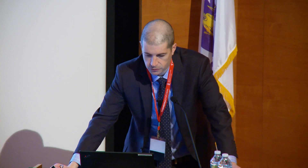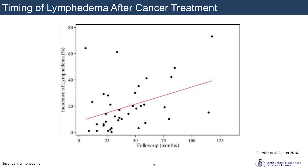Looking at the incidence of lymphedema by cancer type: breast cancer has a rate of about 30%, and is the most common in the U.S. because breast cancer is the most common cancer among women. Melanoma is about 9%, much more common in lower extremity melanoma due to gravity. GU and gynecologic cancers have a much higher rate among cervical or vulvar cancer compared to endometrial cancer. Sarcomas also show about a 30% rate. Not surprisingly, the longer you are out from surgery, the higher the prevalence — it can appear the day after surgery or not pop up for several years.